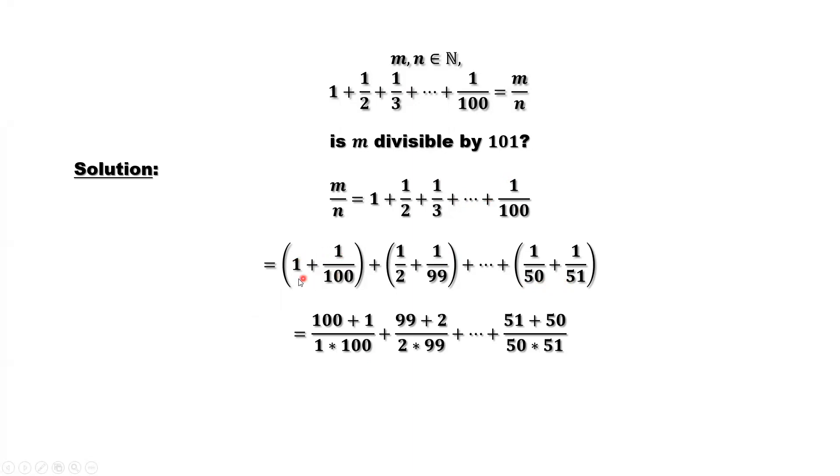Let's consider the common denominator for each sum. The first denominator is 1 times 100, the numerator is 100 plus 1. For the second sum, the common denominator is 2 times 99, the numerator is 99 plus 2. Until the last one, the common denominator is 50 times 51, the numerator there is 51 plus 50.